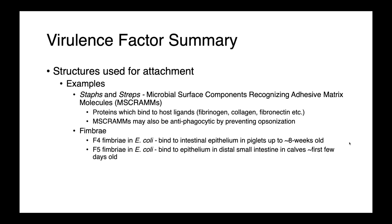Fimbriae are also very well studied, particularly in E. coli. The F4 fimbriae allow E. coli to bind to the intestinal epithelium in pigs in an age-dependent manner — receptors for the F4 fimbriae are present in piglets up to eight weeks old. Similarly, the F5 fimbriae allows E. coli to bind to the epithelium in the distal small intestine of calves in just the first few days of life. So we have a tissue-specific, cell-specific, and age-specific factor that makes pathogenesis quite specific to a particular cohort of animals.